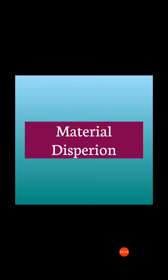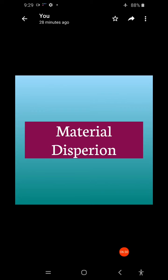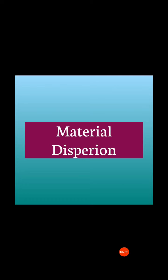Material dispersion is also called chromatic dispersion because it is analogous to the effect of a prism — when light hits a prism, it spreads out the spectrum. In material dispersion, pulse spreading occurs when different wavelengths follow the same path through the optical fiber.